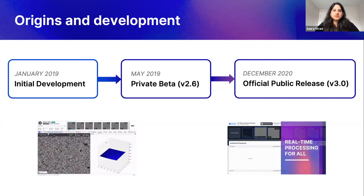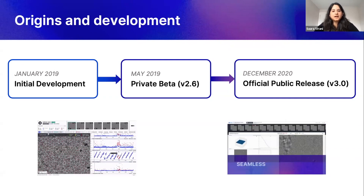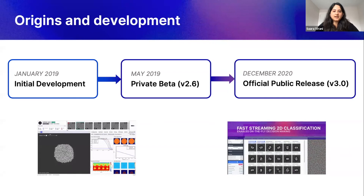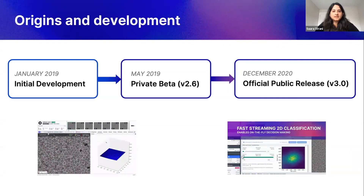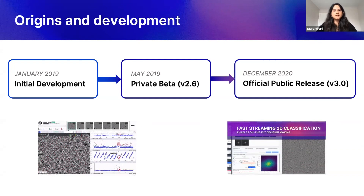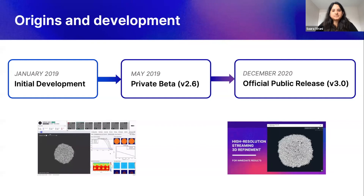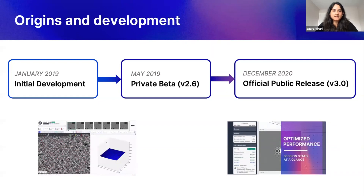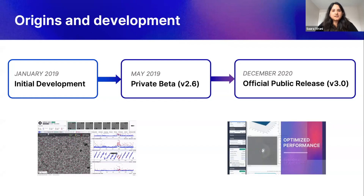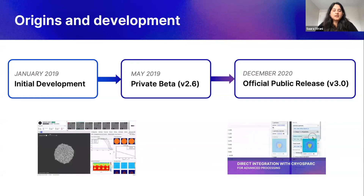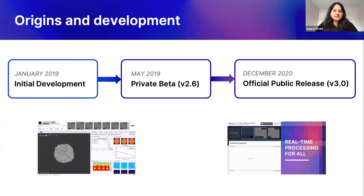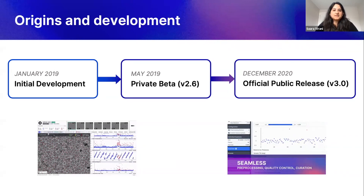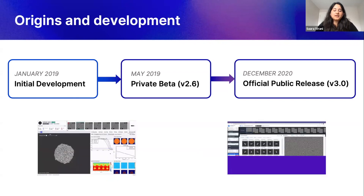We started working on CryoSpark Live initially in January 2019 and released the first version in a private beta in May of that year. We'd like to say a huge thank you to the many labs and users that took the time to test out Live and provide their feedback. Over the course of the beta, we released 11 additional updates. In December 2020, we launched a fully redesigned application taking into account the extensive feedback that we received. CryoSpark Live was quite a large engineering undertaking, so we're very proud to deliver it free of charge for nonprofit academic use, enabled by default as of CryoSpark version 3.0. Our team is continuously working to build improvements and enable more advanced workflows.